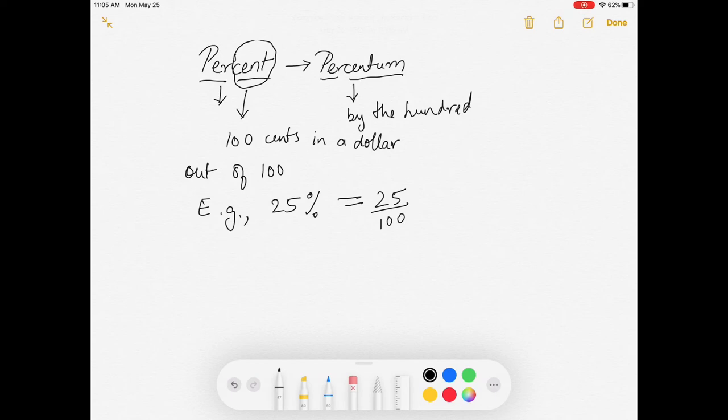And that, if you notice, is actually a fraction. So percent is a fraction, and fraction, we know, if we do division, can give us a decimal.